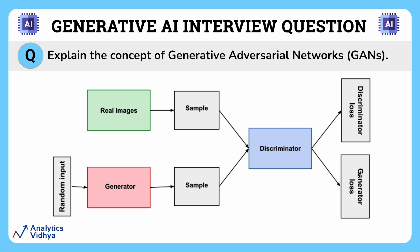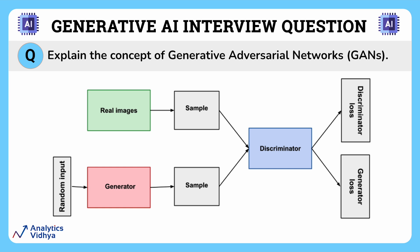This training process is known as adversarial, and through this adversarial process the networks compete and learn from each other. At the end of this training, the generator is capable of generating high quality images — so much so that they are difficult for the discriminator to distinguish from real data.